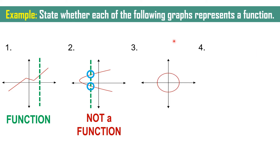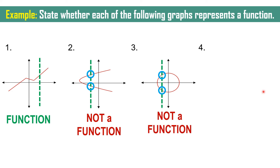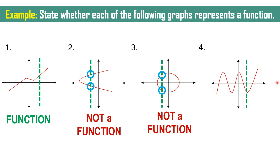Another example: we have a circle. Drawing a vertical line on this graph shows it intersects with two points — it touches the circle here and also here. So this is not a function. For the last graph, drawing a vertical line intersects at only one point. We may try the other side — again, it intersects at only one point. Therefore, this is considered a function.